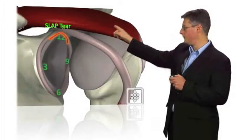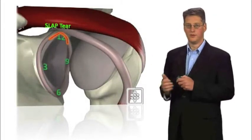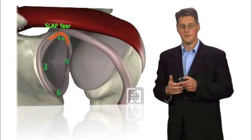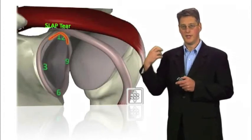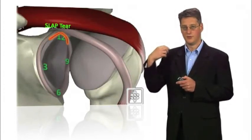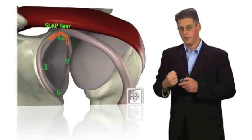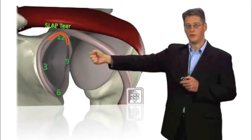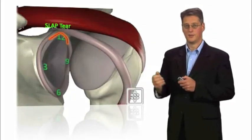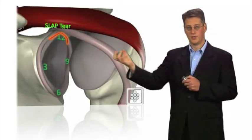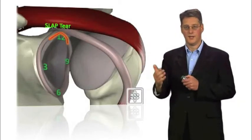If you get a tear of the labrum at the top of the shoulder that's known as a SLAP tear. This is the area where the biceps attaches into the shoulder and this can occur with a throwing injury, falling onto the elbow, or a wrenching injury pulling that biceps off the top of the shoulder causing a SLAP tear.